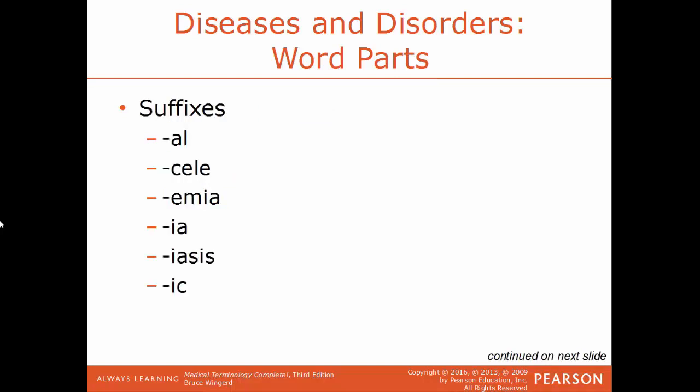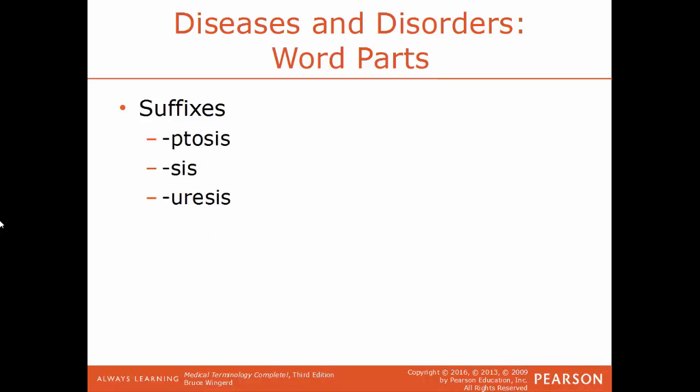Some common suffixes: al means pertaining to; cele means a hernia; emia means of the blood; ia means a condition; iasis is an abnormal condition; ic means pertaining to; itis means inflammation of; megaly means abnormal enlargement; oma is a reference to a tumor; osis means an abnormal condition; pathy is a reference to a disease; ptosis means a drooping or sagging; sis means the state of or a condition; and uresis means urination.